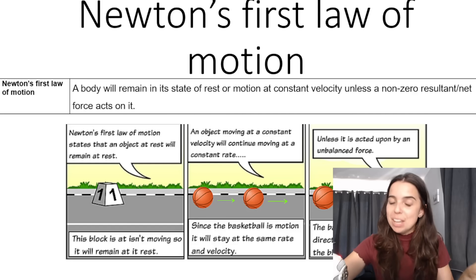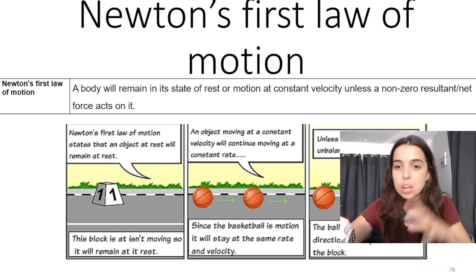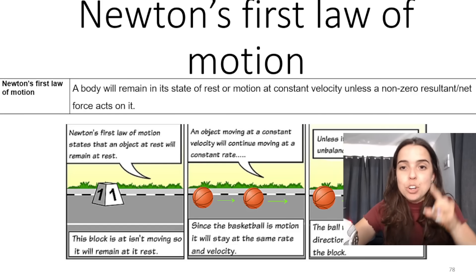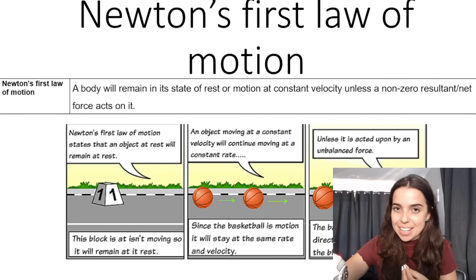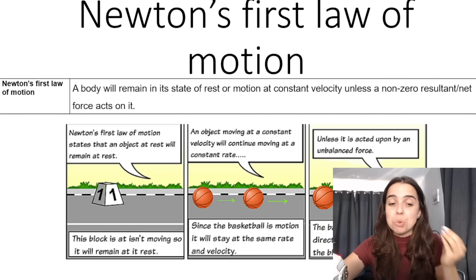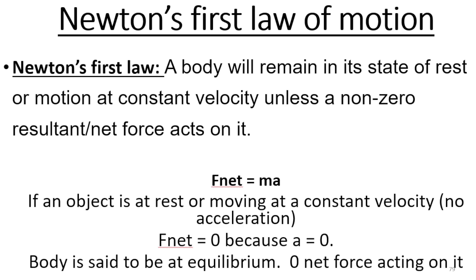Teacher tip: I set and mark matric papers, so I know that if you don't say 'non-zero,' they take away a mark. If you don't say 'resultant' or 'net,' they also take away a mark. You need to say these things to get full marks for your definition. This definition comes directly from your exam guidelines and is the correct definition. You will see alternative definitions on the internet or in other textbooks, but this is the correct one according to your exam guidelines.